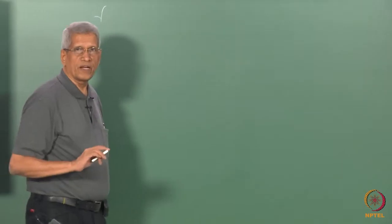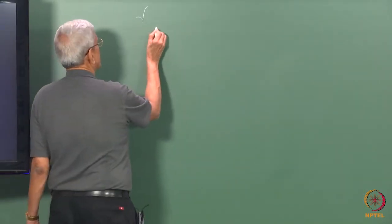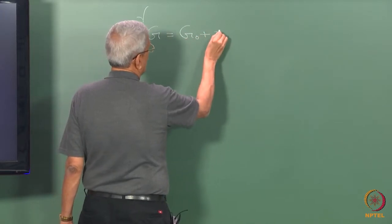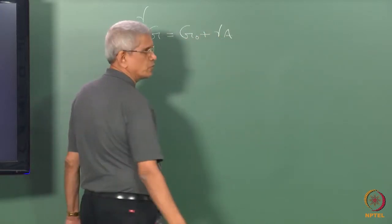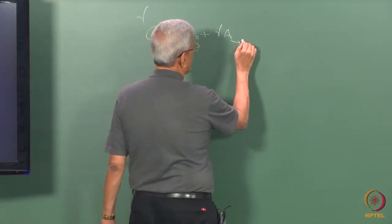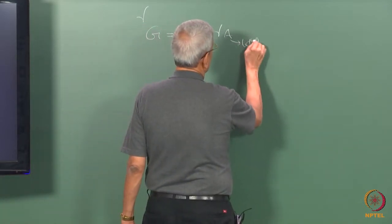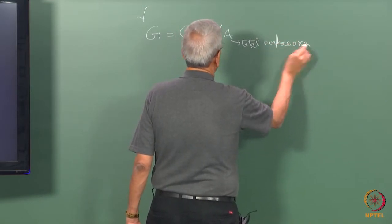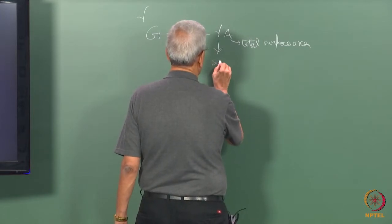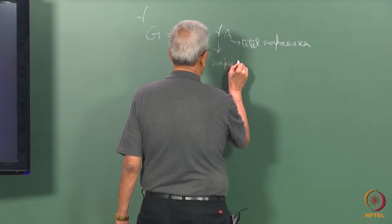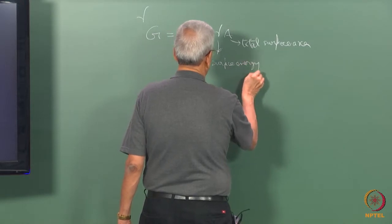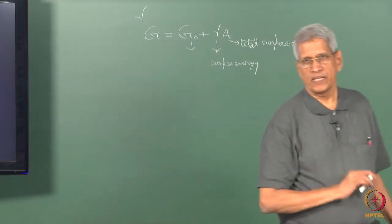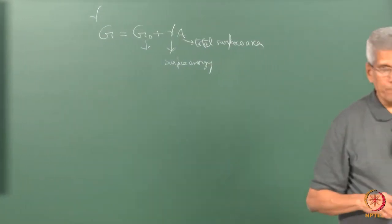The total free energy of a sample is given by G = G₀ + gamma × A, where A is the total surface area, gamma is the surface energy, and G₀ is the bulk chemical free energy.